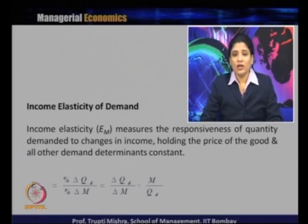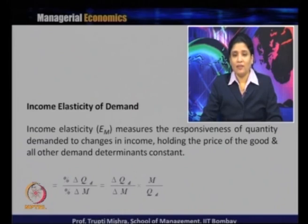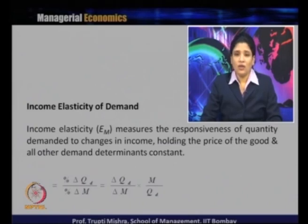Here QD is the quantity demanded and M is the income. If you simplify this, it becomes ΔQD/ΔM multiplied by M/QD. M is the original income, QD is the original quantity demanded, ΔM is the change in income, and ΔQD is the change in quantity demanded. So we can find the income elasticity of demand by ΔQD/ΔM × M/QD.